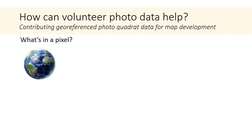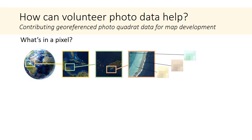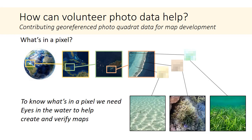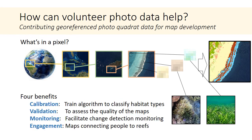So where do you fit in? We need to know what's in the pixel. When you zoom into global imagery on a specific reef, you end up with pixels that have specific colors and textures. We need an eye in the field that captures photos of these areas so we can understand what these colors and textures represent and use that in our maps. These field photos are used to train the algorithms, validate them, and assess map quality. If you keep returning to the same areas, you also help facilitate the capability to look at change over time.